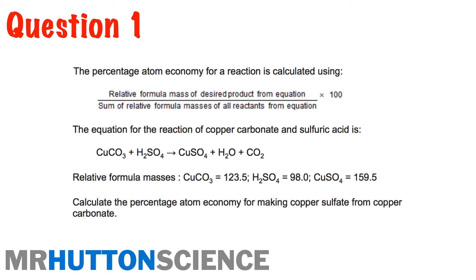So question one. The percentage atomic economy for reaction is calculated using. It even gives you the equation here, guys. You don't have to remember it. There's a reaction there for you, and it says to calculate the percentage atomic economy for making copper sulfate from copper carbonate. So what do you actually want to get? That's your desired product. You want to get the copper sulfate. There you go. That's your desired product. And then the sum of the relative formula masses of all the reactants is the other part.